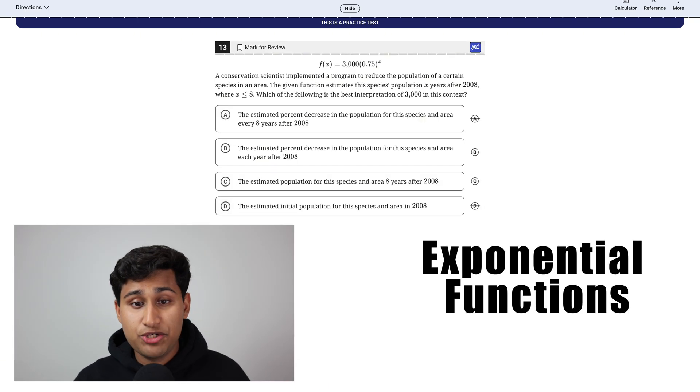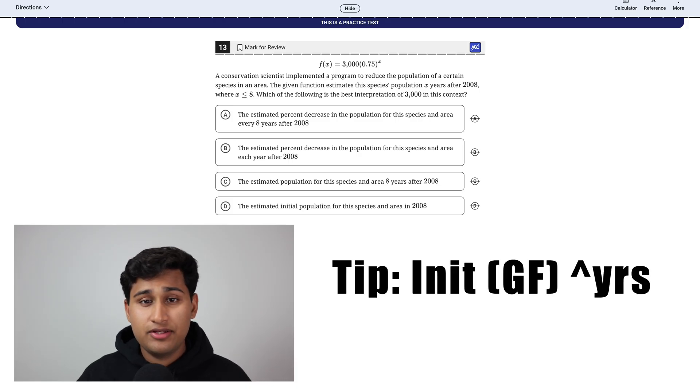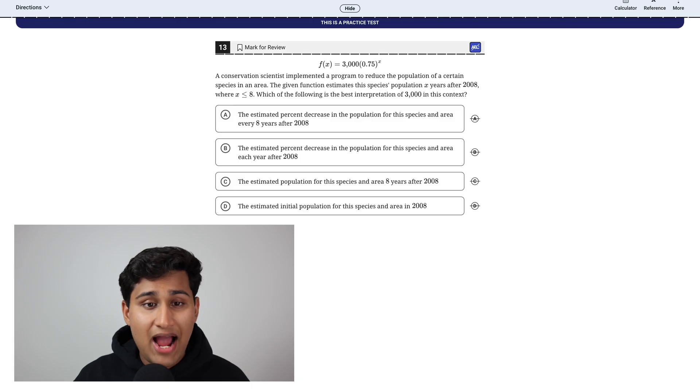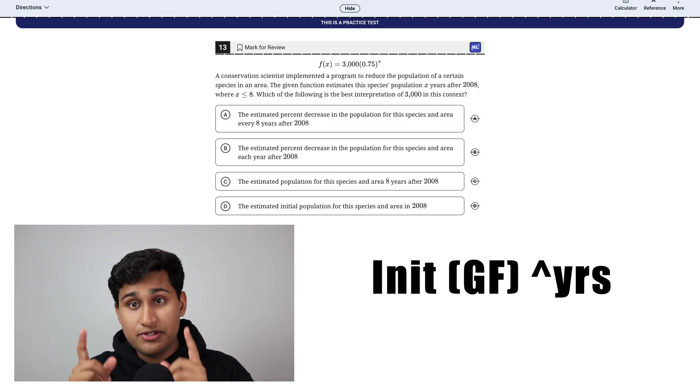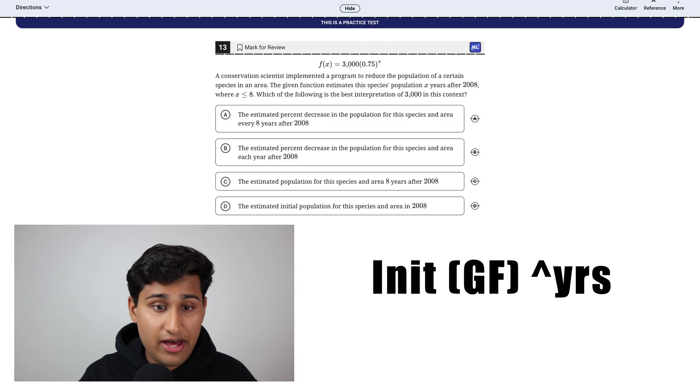Now for these type of questions, these are exponential functions. So my tip for these ones is in general for these, your formula is going to be somewhere with initial value times growth factor to the power of years. So in this one, they're asking what is the best interpretation of 3000? And like I said, if you follow that formula, it's initial value times growth factor to the power of years. So that 3000 is your initial value.